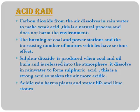Acid rain: carbon dioxide from the air dissolves in rain water to make a weak acid. This is a natural process and doesn't harm the environment. The burning of coal at power stations and the increasing number of motor vehicles have serious effects. Sulfur dioxide is produced when coal and oil burn and is released into the atmosphere.